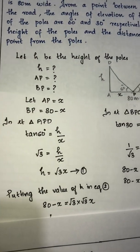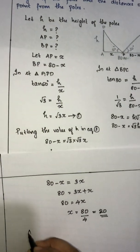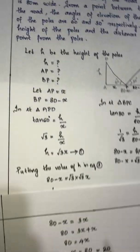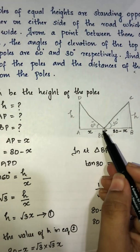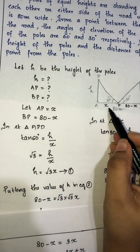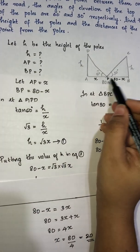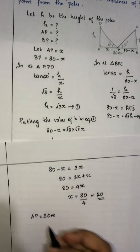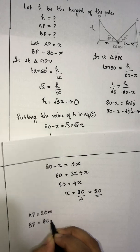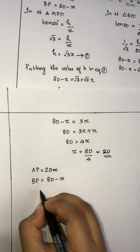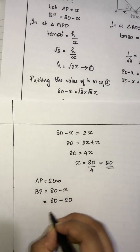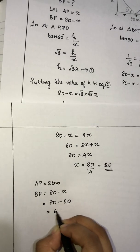Since AP is equal to x, AP is equal to 20 meters. And BP is equal to 80 minus x, that is 80 minus 20, which is equal to 60 meters.